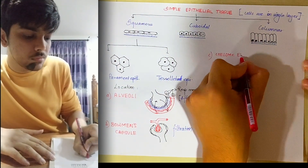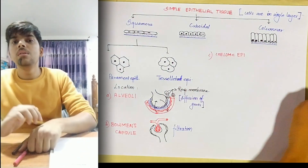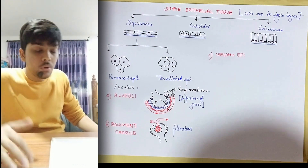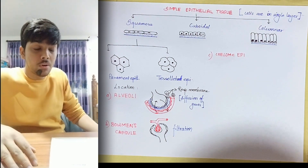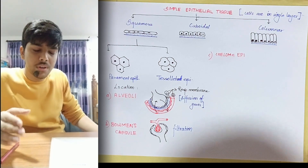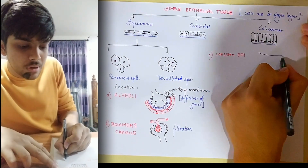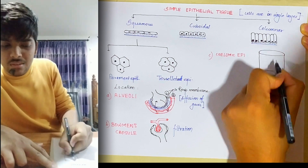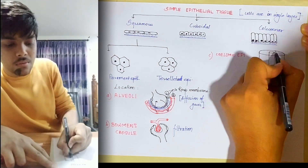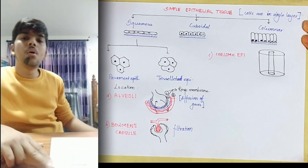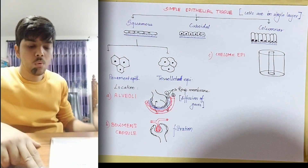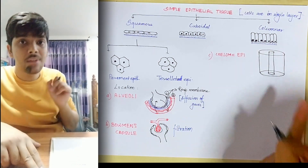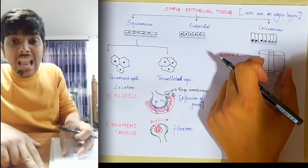C — C for coelomic epithelium. Humans have a tube-within-a-tube body plan. There is a large tube, and within it there is a smaller tube. The wall of the larger tube is your body wall, and the wall of the inner tube is your gut wall — the wall of your digestive system. So there's a larger pipe which is your body, and inside it a thinner pipe which is your digestive system.